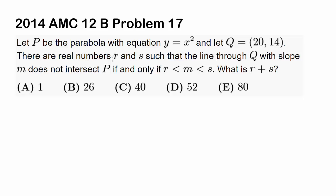This is 2014 AMC 12B problem 17. Let P be the parabola with equation y equals x squared and Q be (20, 14). There are real numbers r and s such that the line through Q with slope m does not intersect P if and only if r is less than m which is less than s. What is r plus s?